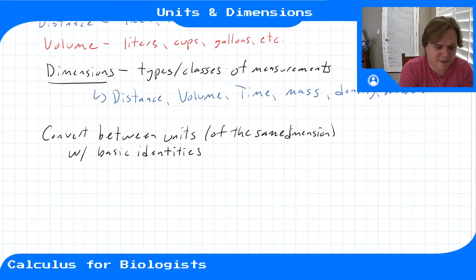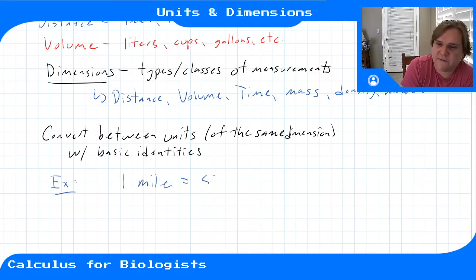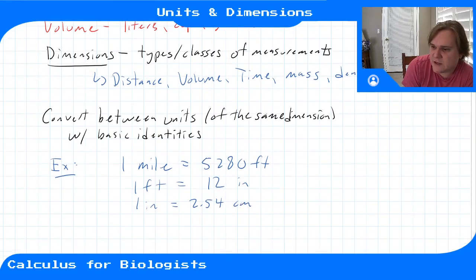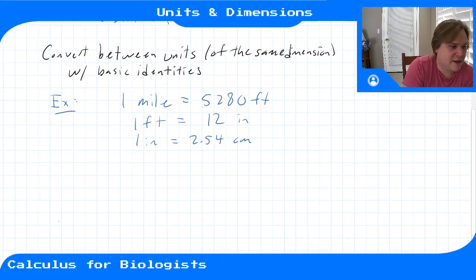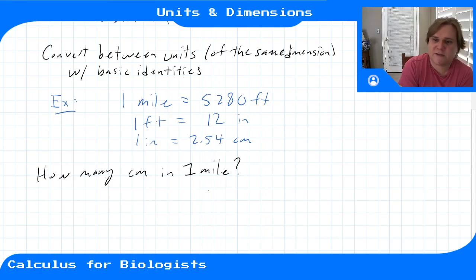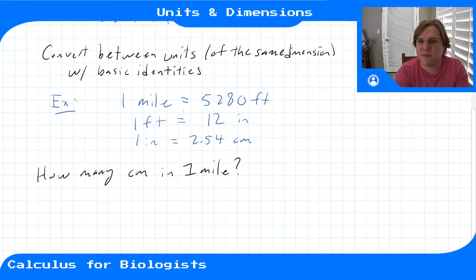Here are some examples. In a mile there are 5,280 feet. In a foot there are 12 inches. In an inch there are 2.54 centimeters. So you can ask: how many centimeters are in a mile? To do that, we take these fundamental basic identities and turn them into conversion factors by manipulating the equations a little bit.